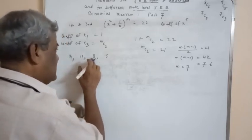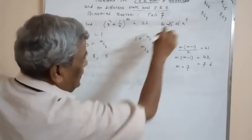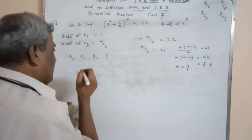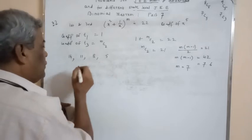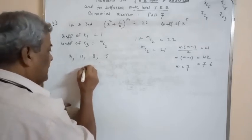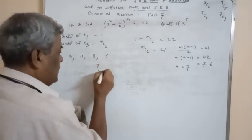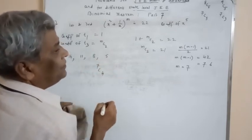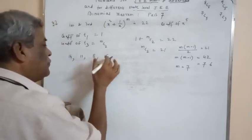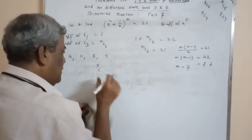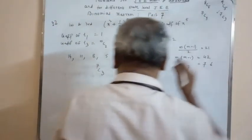The required coefficient of x^5 is in the fourth term. The fourth term corresponds to r=3, so the coefficient is 7C3. Option D is the correct answer.